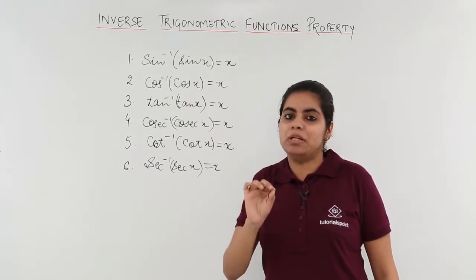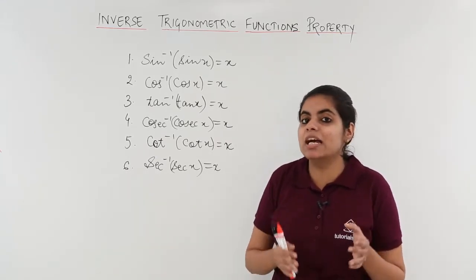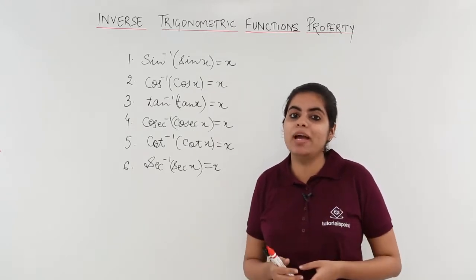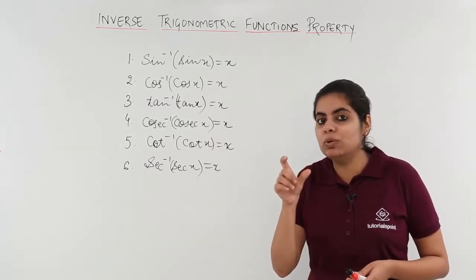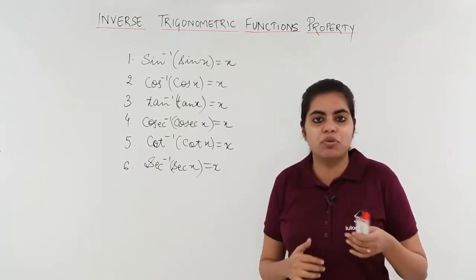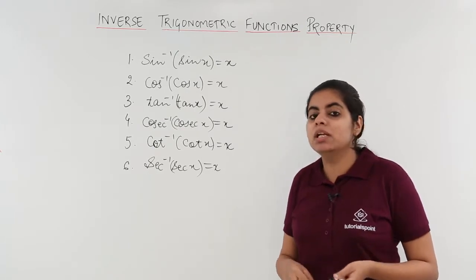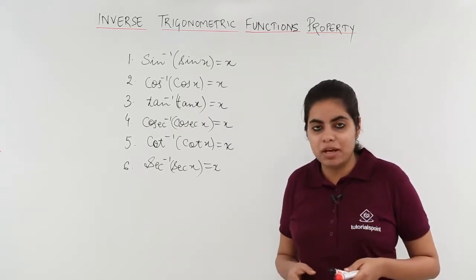Remember the principal value branch video? We understood that sin inverse sin x is equal to x when the value is the principal branch value, that is minus pi by 2 to pi by 2 for sin. Similarly for cos, we had 0 to pi. Similarly for tan, we had some value.